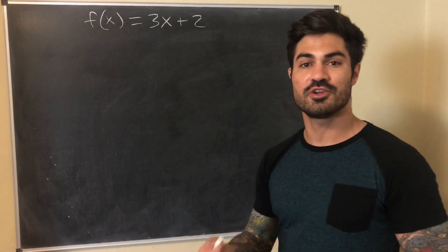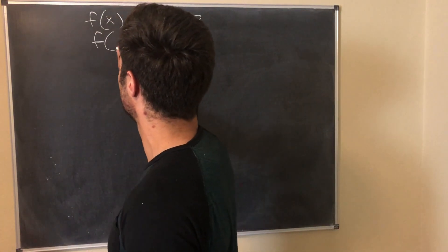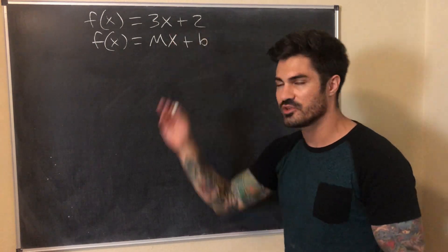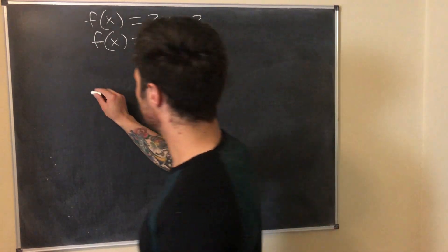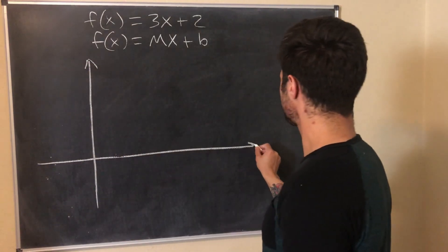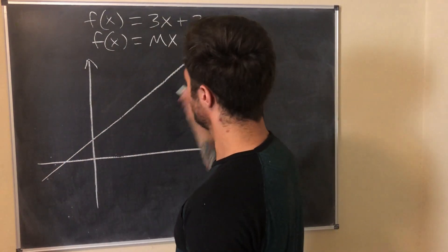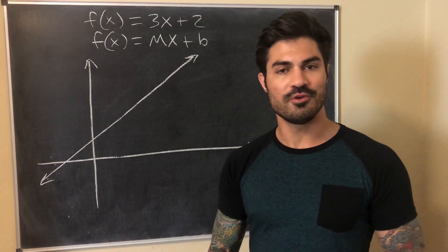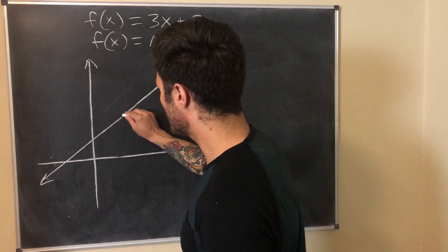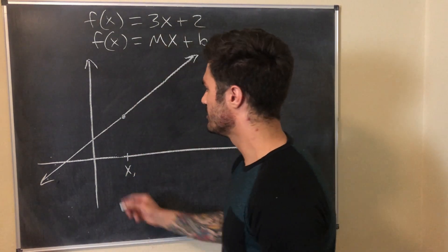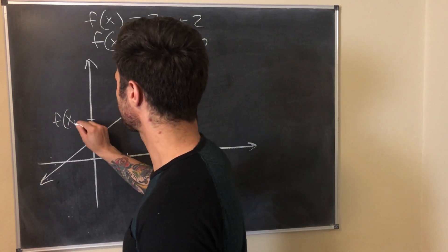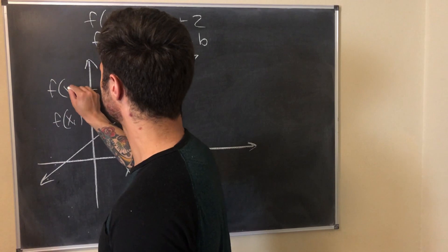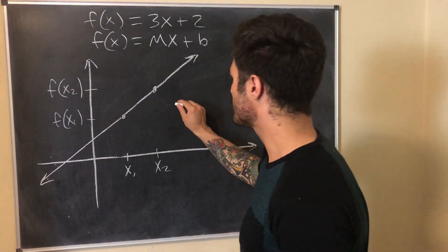If I were to ask you to find the slope of this function, you could probably tell me without writing anything down because it's already in the nice form f(x) = mx + b, where m is the slope and b is the y-intercept. So you can look at that function and say the slope is 3. But what if I just gave you the graph of a linear function — something like this — and said find the slope just given this graph? Well, one thing you could do is pick two points. We'll pick this point and call it x1, so this output is f(x1), and we'll pick this point and call it x2, so this output is f(x2).